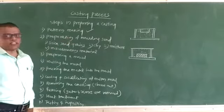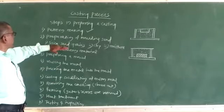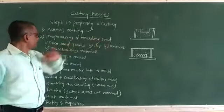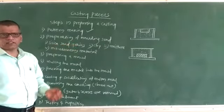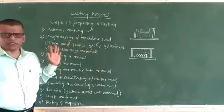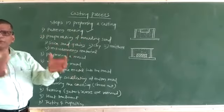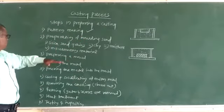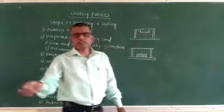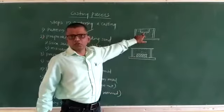After making the pattern, the next step is preparation of molding sand. Different ingredients are required for the preparation of molding sand, such as silica sand. Once the molding sand is prepared, the creation of a cavity in the molding sand is called a mold.